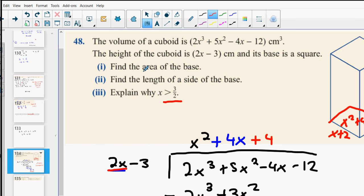Explain why x always has to be bigger than 3 over 2. Here it is. You don't have negative height. Is the height allowed to be smaller than 0? Height has to be bigger than 0. So, this means 2x minus 3 has to be bigger than 0. 2x has to be bigger than 3. x has to be bigger than 3 over 2. Any questions?